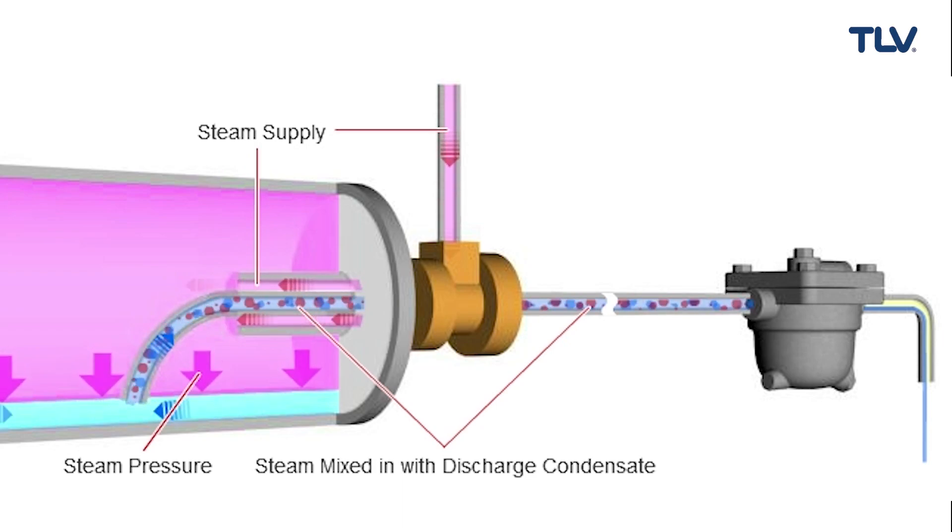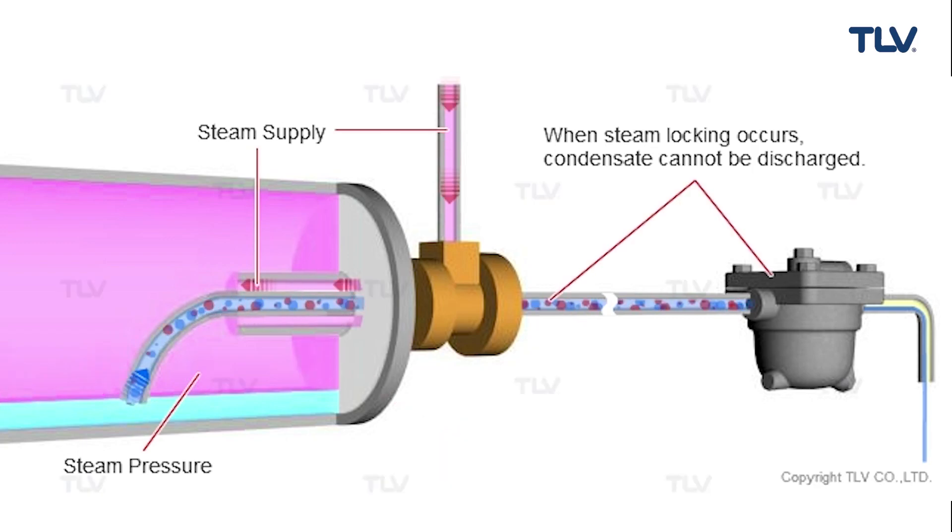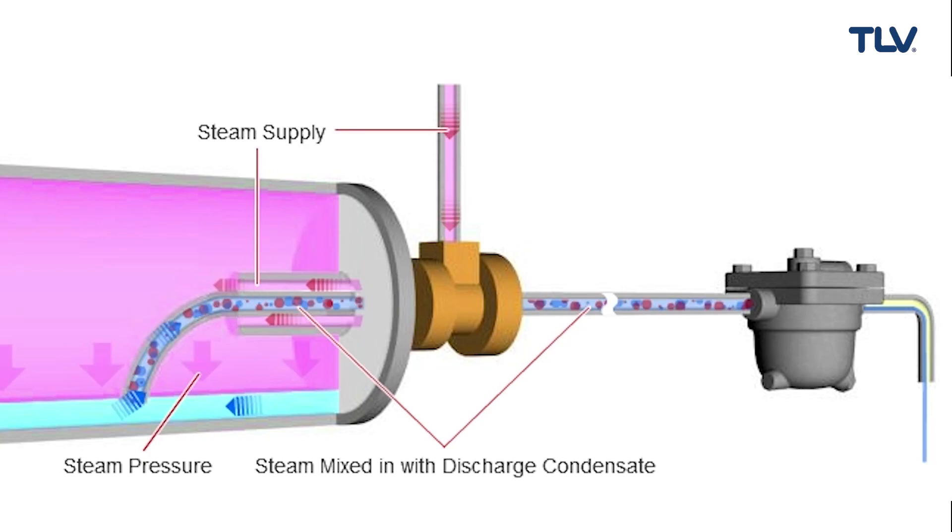However, this setup can be difficult with certain types of equipment, such as rotating dryers that use a siphon pipe or internal scoops to discharge condensate. If reusing steam is not an option, then a different countermeasure is required.